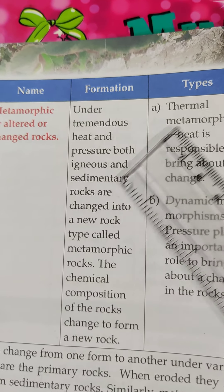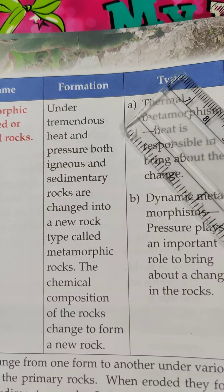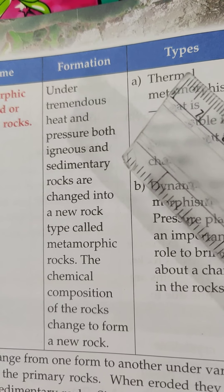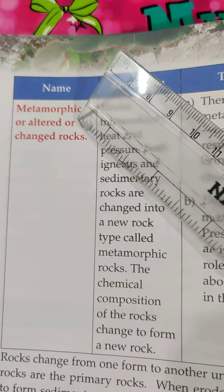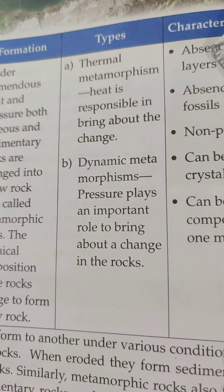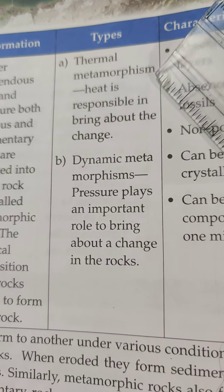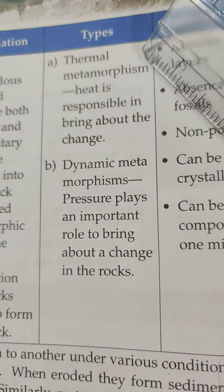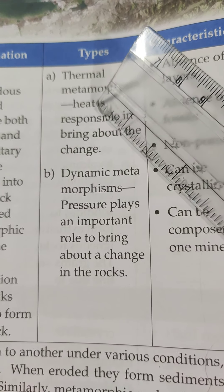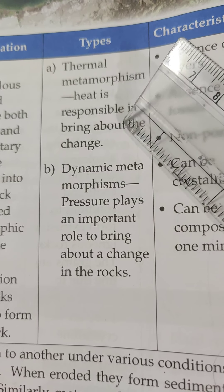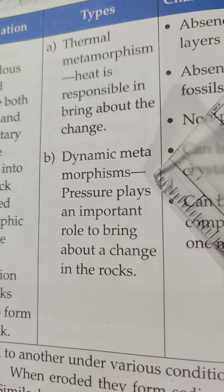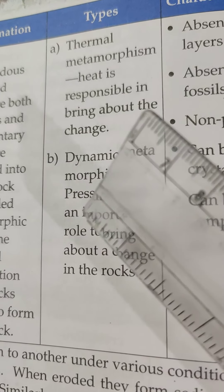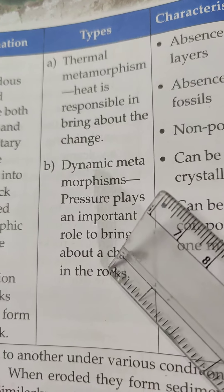Metamorphic rocks are formed under tremendous heat and pressure. Both igneous and sedimentary rocks can be changed into metamorphic rocks. They are of two types: thermal metamorphic rocks, where heat is responsible for the change, and dynamic metamorphic rocks, where pressure plays an important role in bringing about the change.